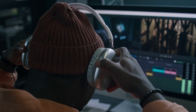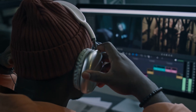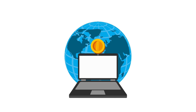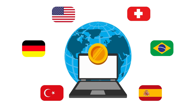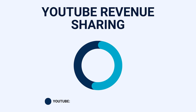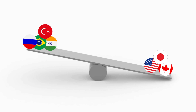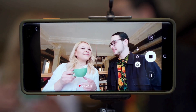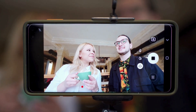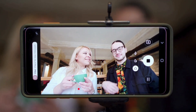So why is dubbing becoming a game-changer in the content world? The answer is simple: YouTubers make money based on advertising costs in each country. YouTube takes a 45% cut of ad revenue, leaving creators with 55%. In countries like Turkey, Brazil, Russia, and India, ad costs are much lower compared to high-CPM countries like the USA, Canada, and Japan. So for creators in low-CPM regions, dubbing their content into high-CPM markets is a no-brainer.